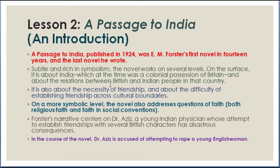A Passage to India, published in 1924, was Forster's first novel in 14 years and the last novel he wrote. Subtle and rich in symbolism, the novel works on several levels. On the surface, it is about India, which at the time was a colonial possession of Britain, and about the relations between British and Indian people in that country. It is also about the necessity of friendship and about the difficulty of establishing friendship across cultural boundaries. On a more symbolic level, the novel also addresses questions of faith, both religious faith and faith in social conventions.